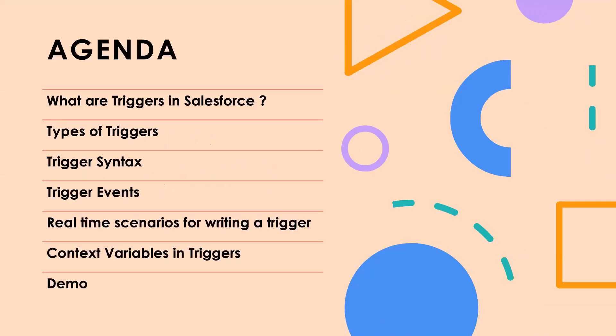First we'll start off the session by understanding what triggers are in Salesforce. Then we will talk about how many types of triggers there are. Then we'll understand what is the trigger syntax, and we'll also talk about trigger events. Next we'll discuss some real-time scenarios for writing a trigger so that you'll have a better understanding. And then we'll discuss context variables in triggers. At last we will see a small demo of writing a trigger.